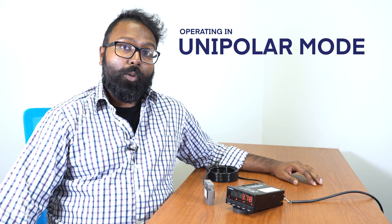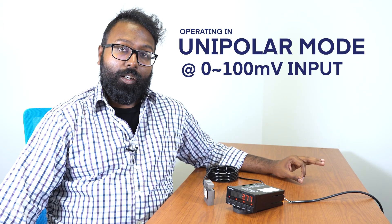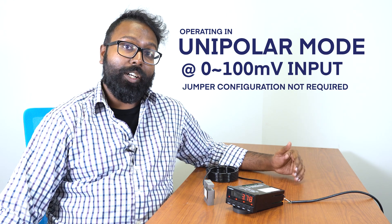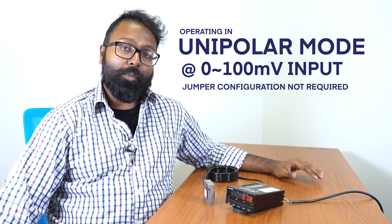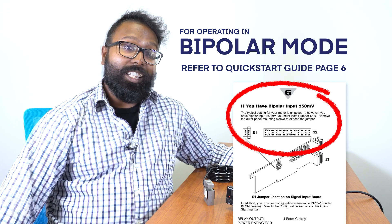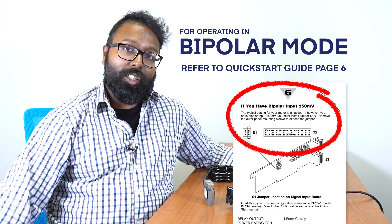Since we're operating in unipolar mode to read 0-100 mV input, there's no need to change any of the jumpers on this meter because when the meter ships out to you, it's set to accept 0-100 mV inputs. If you want to read in bipolar configuration, refer to page 6 of the quick start manual. The link to the quick start is down below in the description of this video.